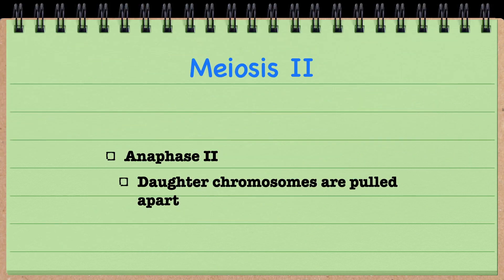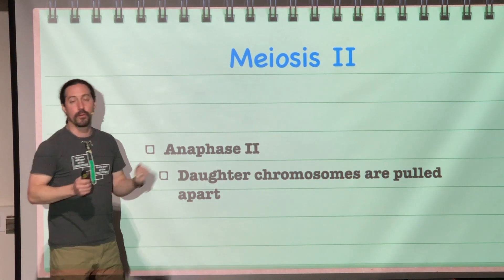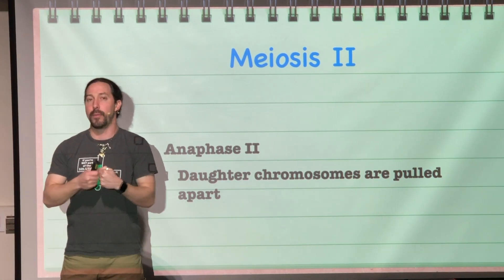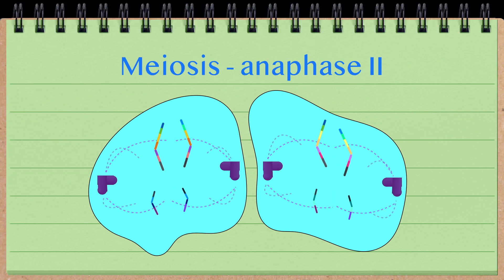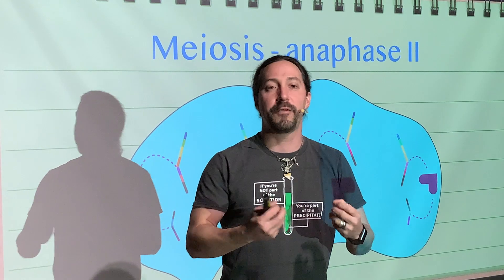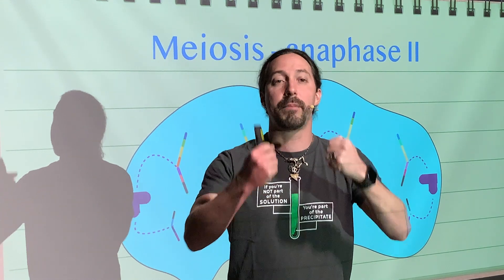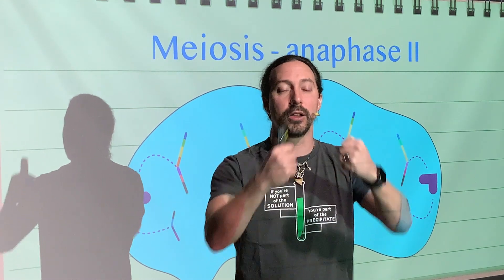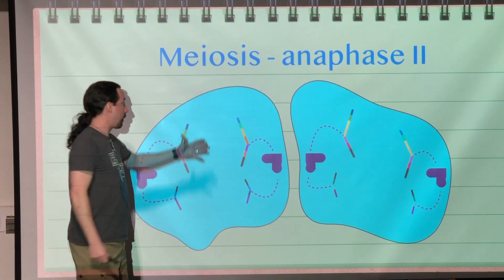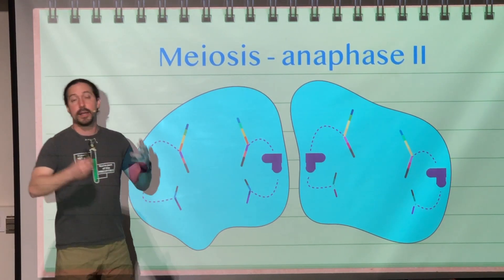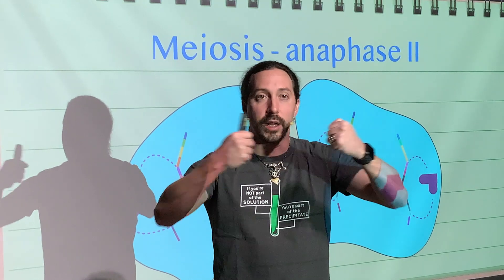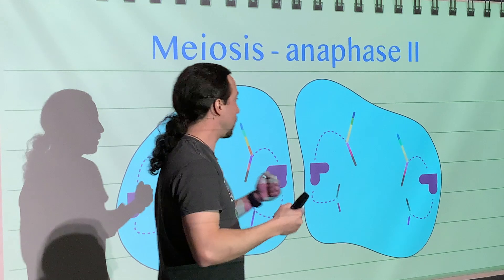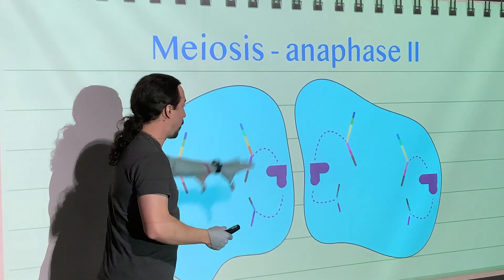Anaphase II is where our chromosomes are now going to be pulled apart — we can refer to those chromosomes at that moment as daughter chromosomes. The daughter chromosomes get pulled apart because the spindle apparatus shortens as the microtubules break down, and that is how the daughter chromosomes are pulled toward the opposite pole.